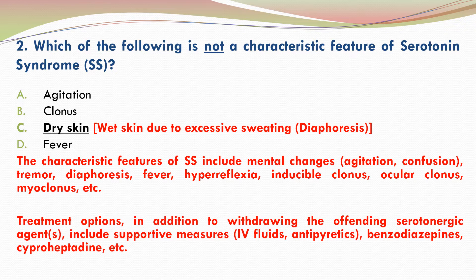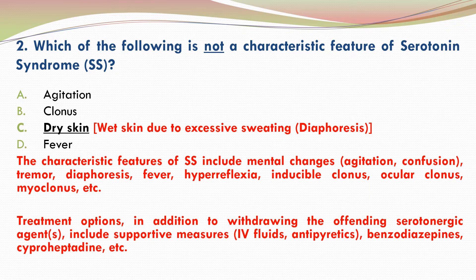The characteristic features of serotonin syndrome include mental changes such as agitation and confusion, tremor, diaphoresis, fever, hyperreflexia, inducible clonus, ocular clonus, and myoclonus. Treatment options, in addition to withdrawing the offending serotonergic agent, include supportive measures such as IV fluids, antipyretics, benzodiazepines, and cyproheptadine. Cyproheptadine is an antihistamine which has an anti-serotonergic effect.